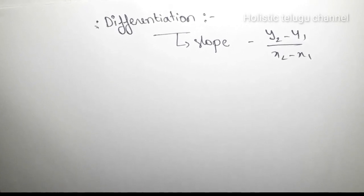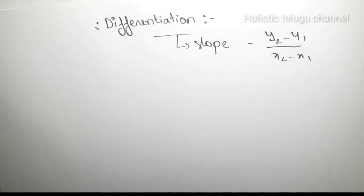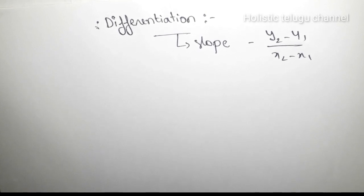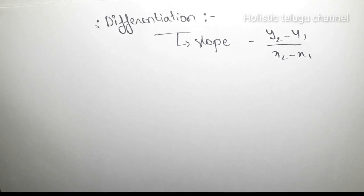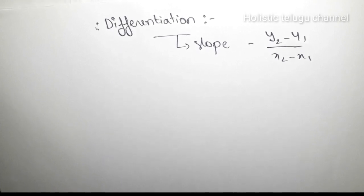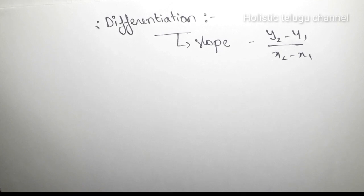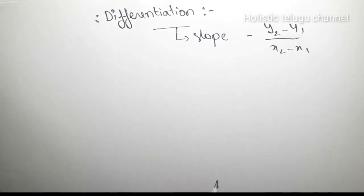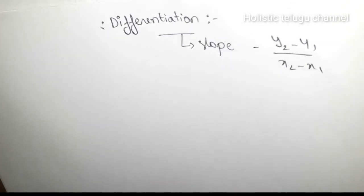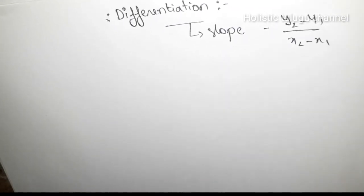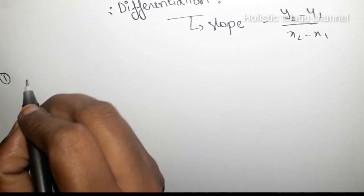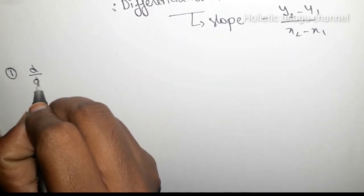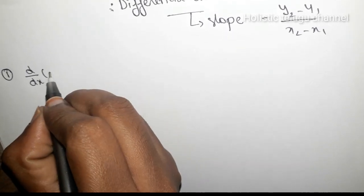The differentiation is about small terms and formulas. What is d by dx of some constant? Let's try the formula. The first one is d by dx of constant.